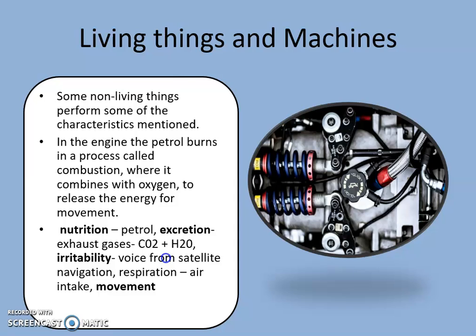How are living things similar to machines? Some non-living things perform some of the characteristics mentioned. In the engine, petrol burns in a process called combustion, where it combines with oxygen to release energy for movement. Nutrition in humans is like the petrol in the engine. Excretion in humans is like the exhaust gases — carbon dioxide and water. Irritability in humans would be like the voice from satellite navigation, and respiration in humans could be like air intake. Both would also display movement.